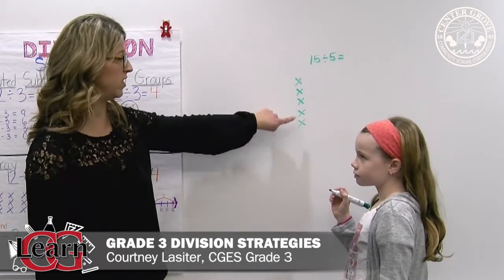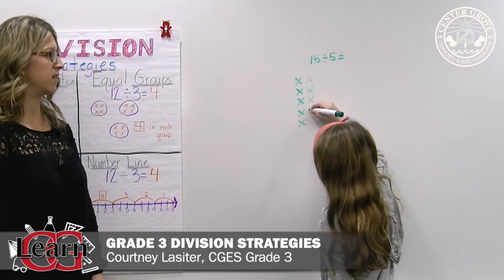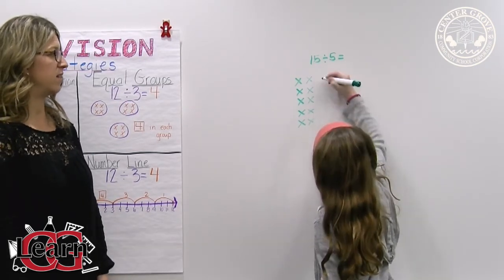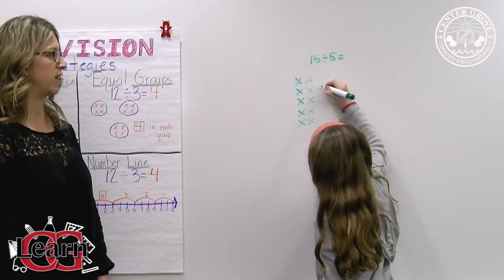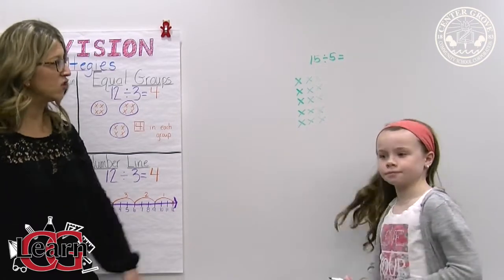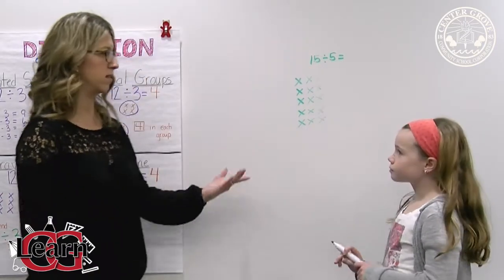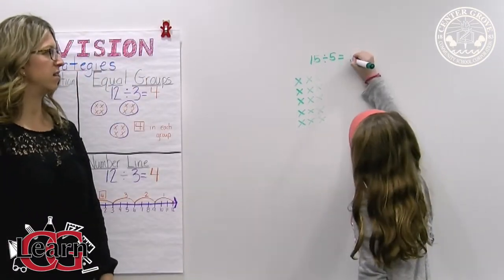So this is 1, 2, 3, 4, 5, 6, 7, 8, 9, 10, 11, 12, 13, 14, 15. And now she's going to look and see that in one row she has 1, 2, 3 X's. So her answer is 3.